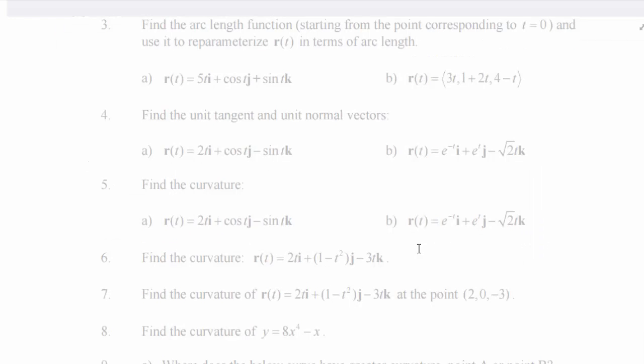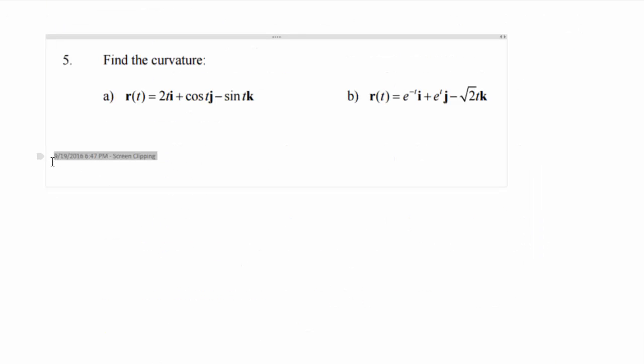Okay, so 5B, you're asked to find the curvature. So normally you would use the magnitude R prime cross R double prime formula divided by magnitude R prime cubed.